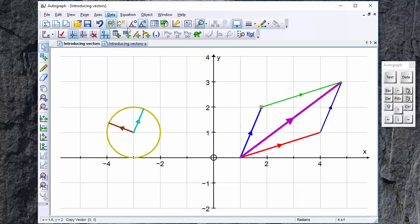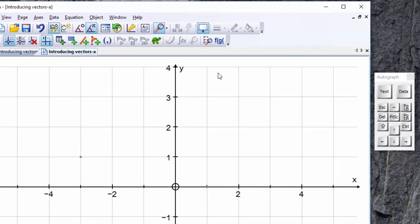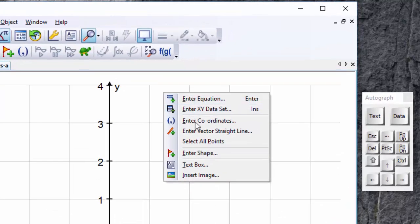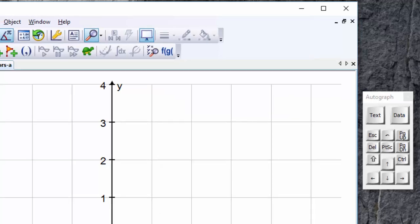OK, so let's start from scratch. First of all, if I want to introduce the idea of a vector, there's nothing here about a vector. Well, it's a vector straight line, it's something else. But we need a point.